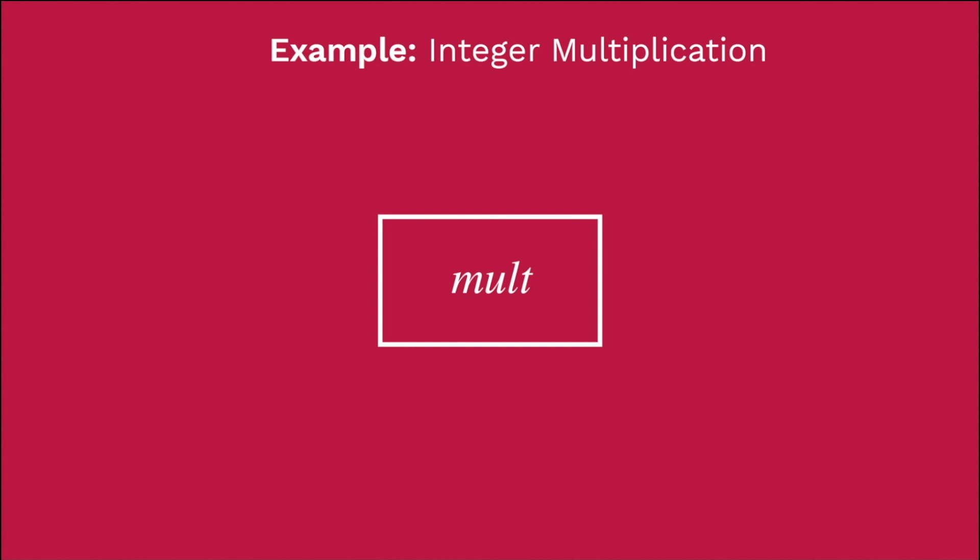So we'll start with the example of integer multiplication. This here is our black box integer multiplier. I'm going to give it some inputs. I'll give it 3, 4 and our multiplier is going to give us back 12.